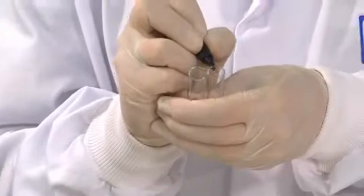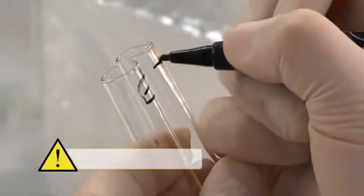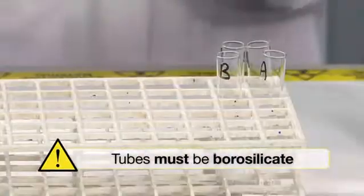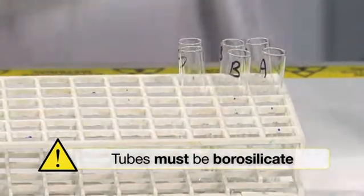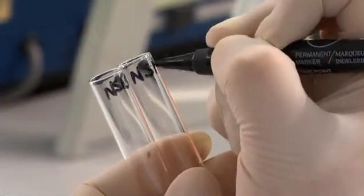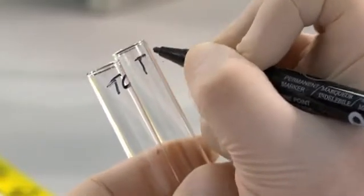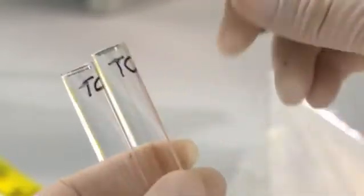While waiting, prepare labeled borosilicate glass tubes, one for each calibrator, two as non-specific binding NSP tubes, and two as total count TC tubes.